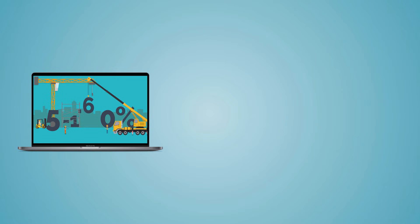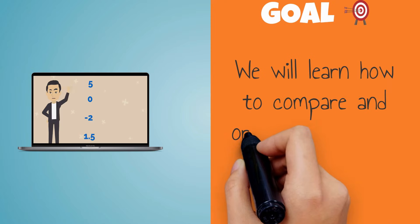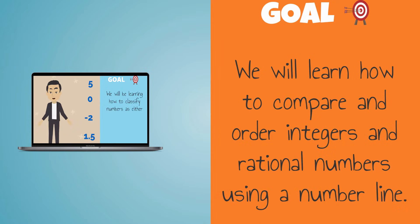Last lesson, we learned how to classify numbers. In this lesson, we will learn how to compare and order integers and rational numbers using a number line.